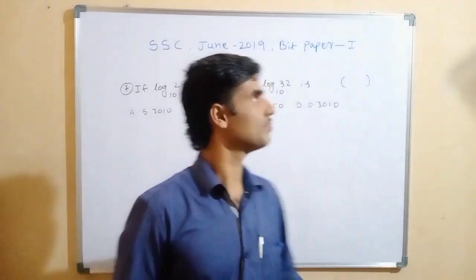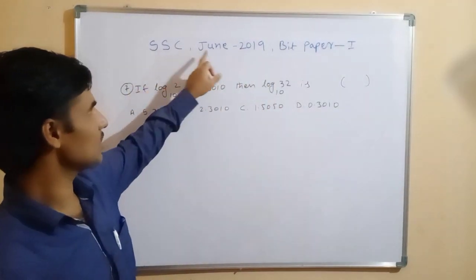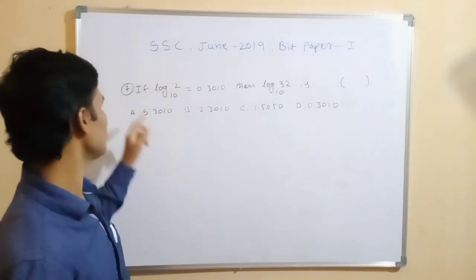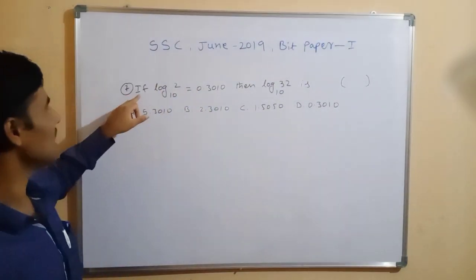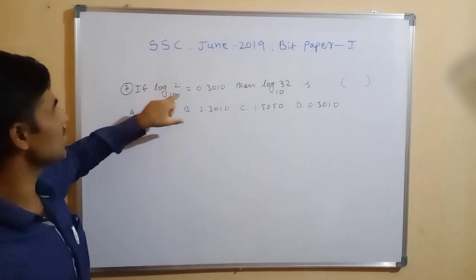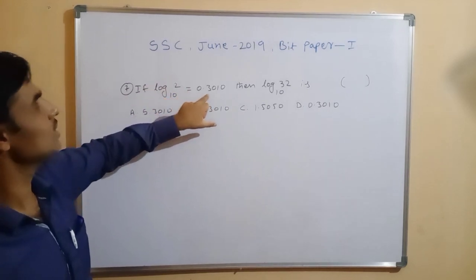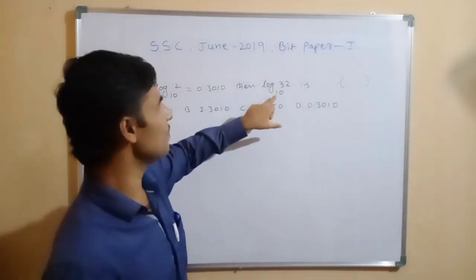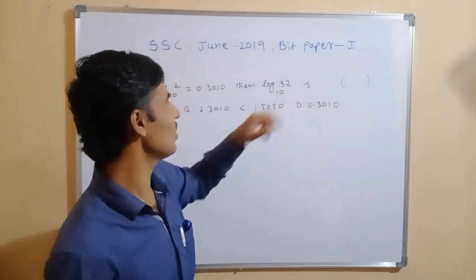Hi friends, now we are discussing SSC public examination June 2019 paper 1, the 7th problem. They given here: if log 2 base 10 equals 0.3010, then log 32 base 10 is what we have to find.